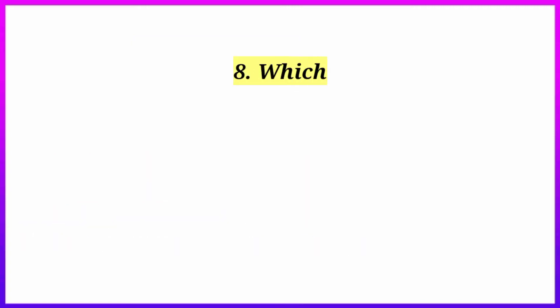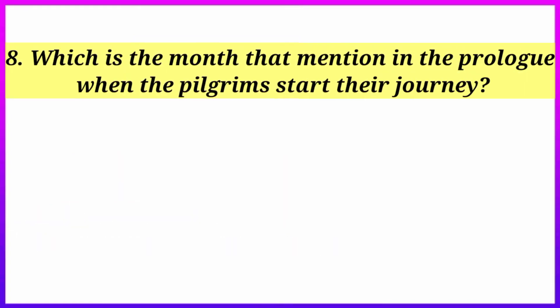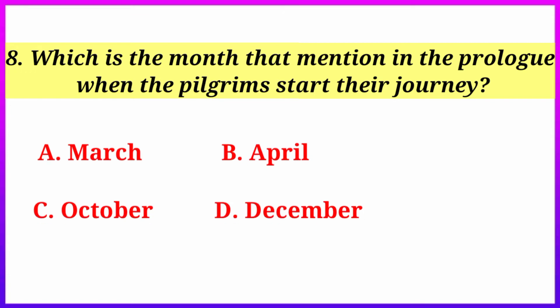Next: which is the month mentioned in the prologue when the pilgrims start their journey? March, April, October, or December. The answer is April. In Chaucer's work, the month of April is celebrated, whereas in T.S. Eliot's work, April is the cruelest month.